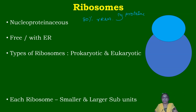rRNA is part of the ribosomes along with ribonucleoproteins. They are nucleoproteinaceous particles — 'nucleo' means nucleic acid is present, specifically ribosomal RNA, and 'proteinaceous' means ribosomal proteins are present.